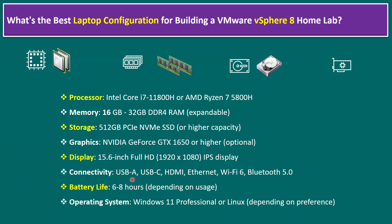For connectivity, you should have USB-A or the latest USB-C, and an HDMI port — the HDMI port is helpful for connecting to an external monitor or projector. You also need an Ethernet card, which can be built-in or via USB-C or USB network adapter. Wi-Fi and Bluetooth should also be included.